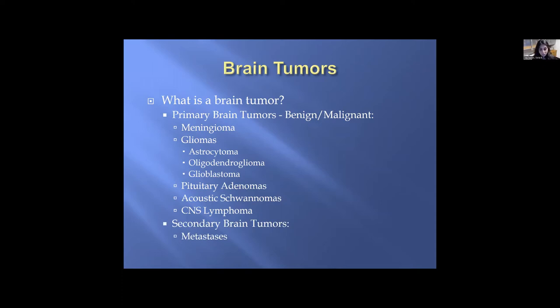There are also secondary brain tumors, which are tumors that have spread from another site in the body to the brain, and these are called metastases.